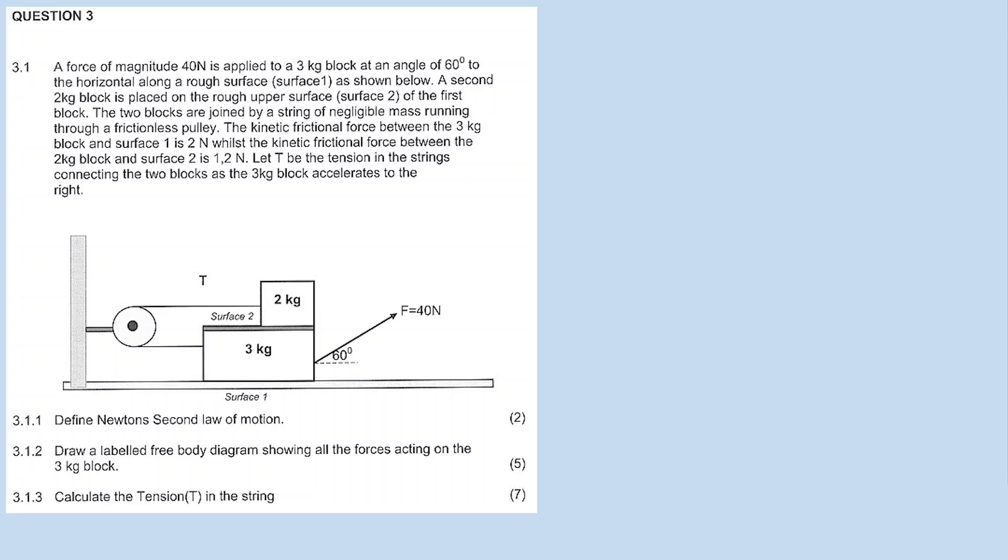Question 3 involves a two-body system with a 2kg and 3kg block stacked on top of each other. A force of magnitude 14 newtons is applied to the 3kg block at an angle of 60 degrees to the horizontal along a rough surface, surface 1 is shown below. A second 2kg block is placed on the rough upper surface, surface 2 of the first block.